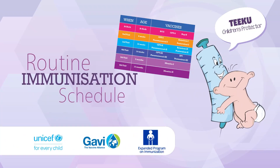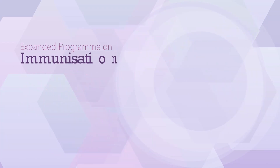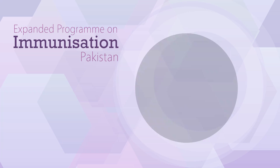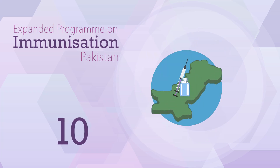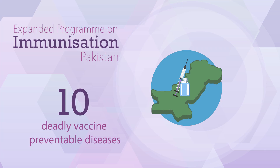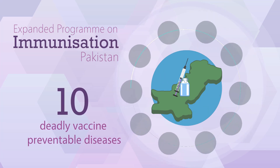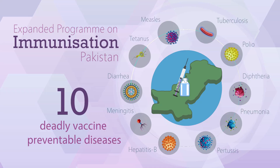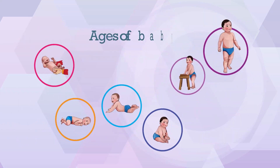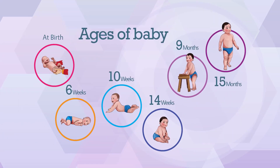Routine Immunization Schedule. Under the expanded program on immunization, there are vaccines recommended by the government of Pakistan for children to prevent against 10 deadly vaccine-preventable diseases, which are tuberculosis, polio, diphtheria, pneumonia, whooping cough, hepatitis B, meningitis, diarrhea, tetanus, and measles. These free vaccines are administered to children from birth till the age of 15 months in 6 visits.